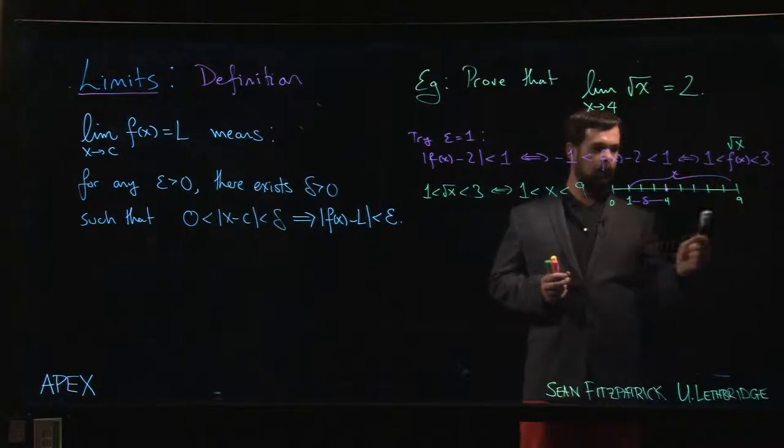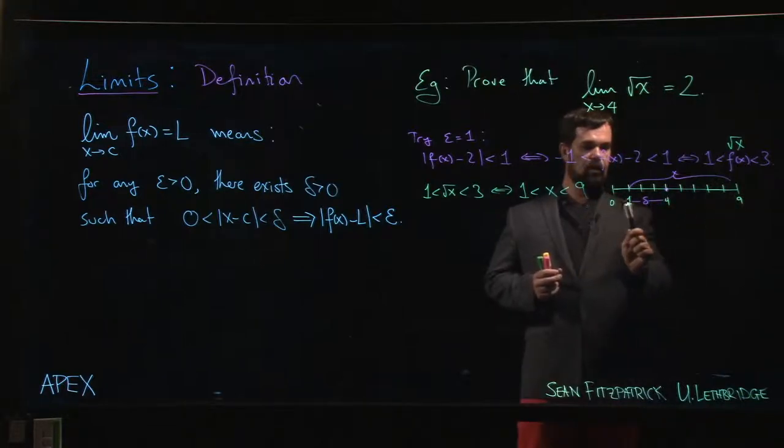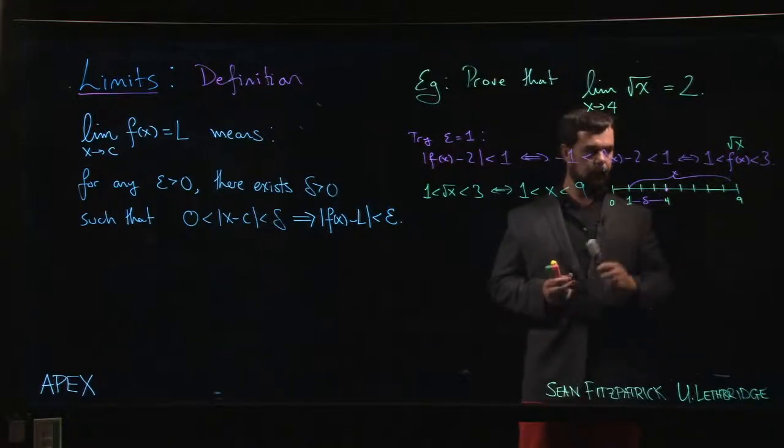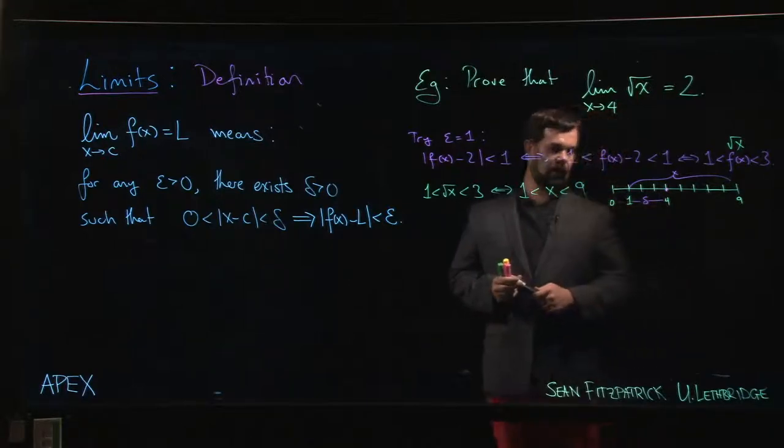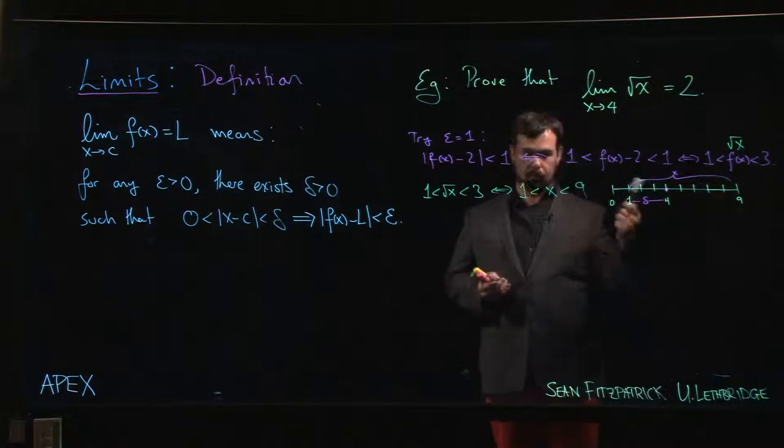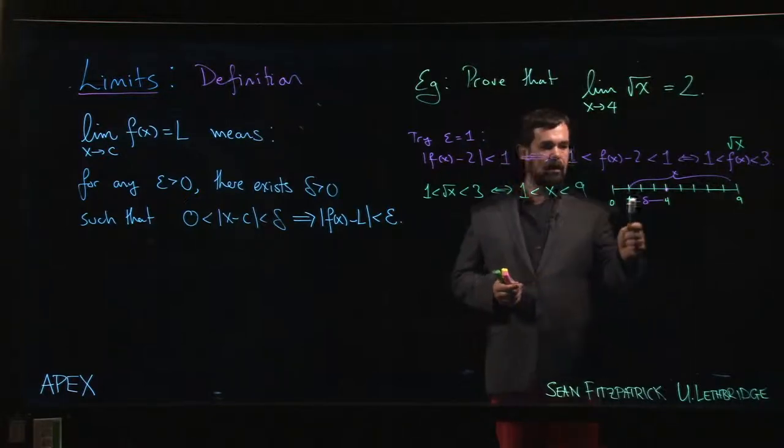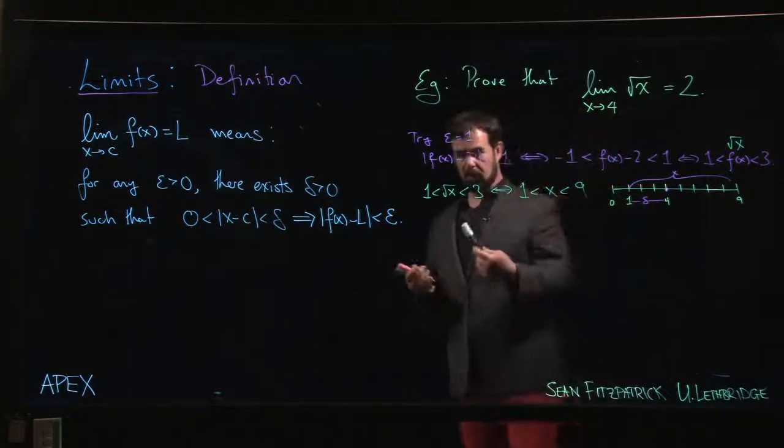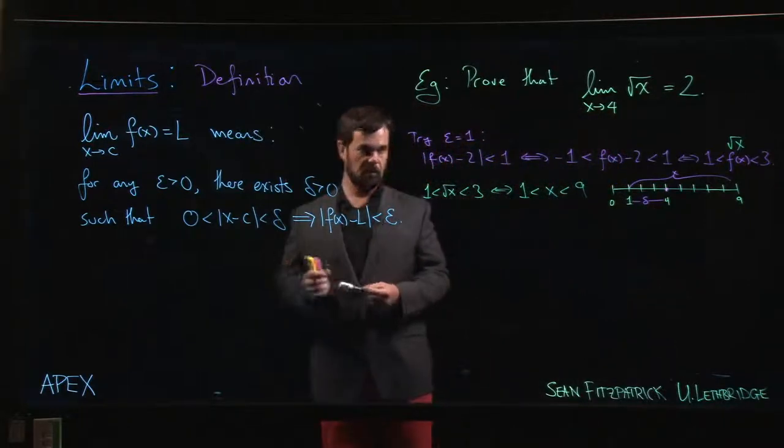And I can work out that I look on either side of 4 between the two distances. This is the smaller, right? 1 is a distance of 3 from 4, whereas 9 is 5 units away. So I know that as long as delta is 3 or less, then x is going to be in that range, and f of x is going to be in the range that I want, and everything works out.